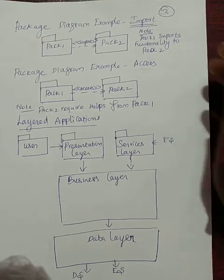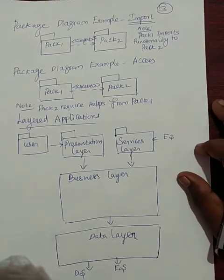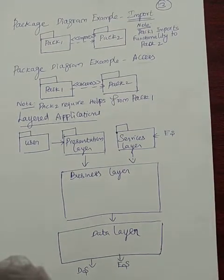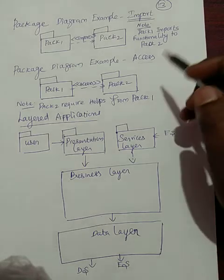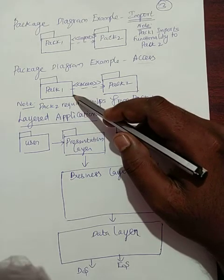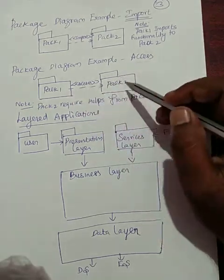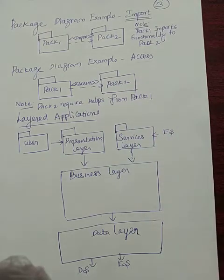Access is another way to call some functions of one package from another package — it is just like help from one package to another package. Your package1 may need help from package2.